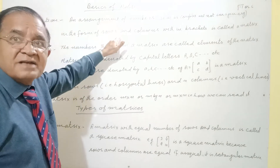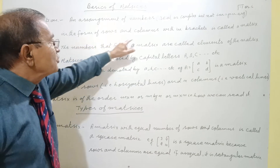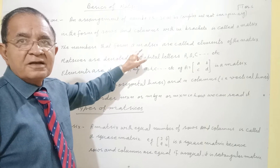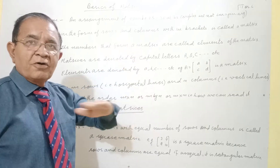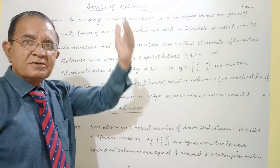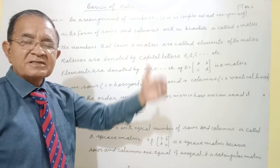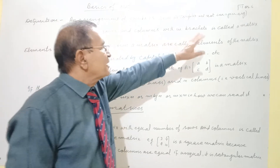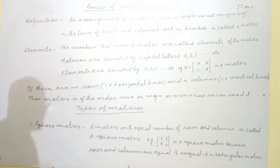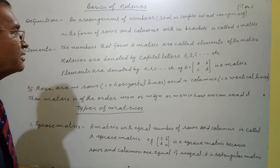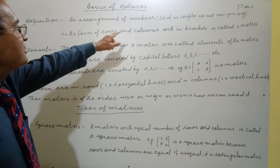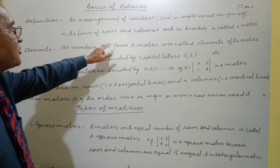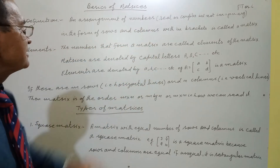That arrangement is in the form of rows and columns. Horizontal lines we call as rows; vertical lines we call as columns. Then we put it in a bracket, and we call it a matrix. So see the definition — so simple: an arrangement of numbers, real and complex but not imaginary, in the form of rows and columns within a bracket is called a matrix.